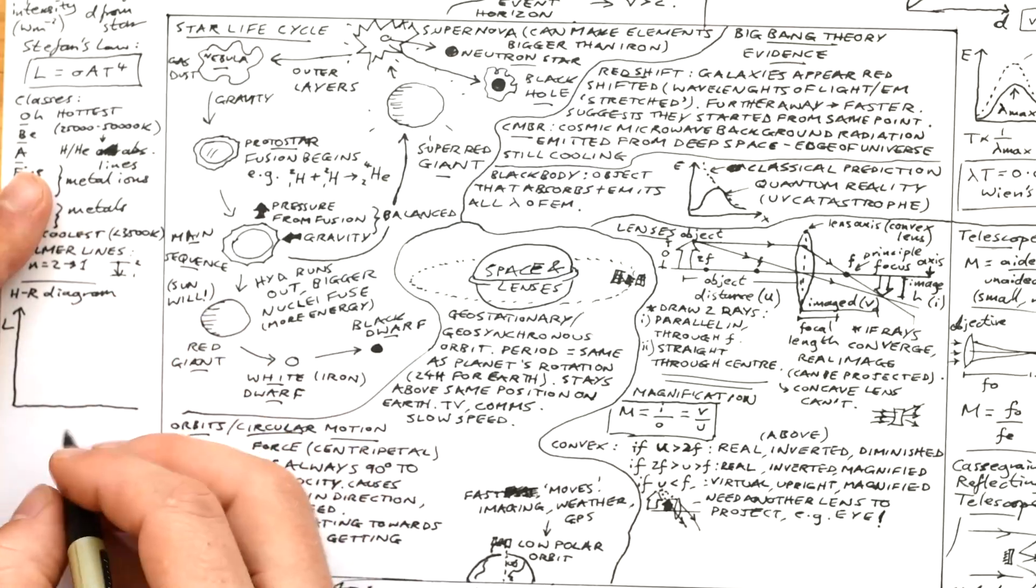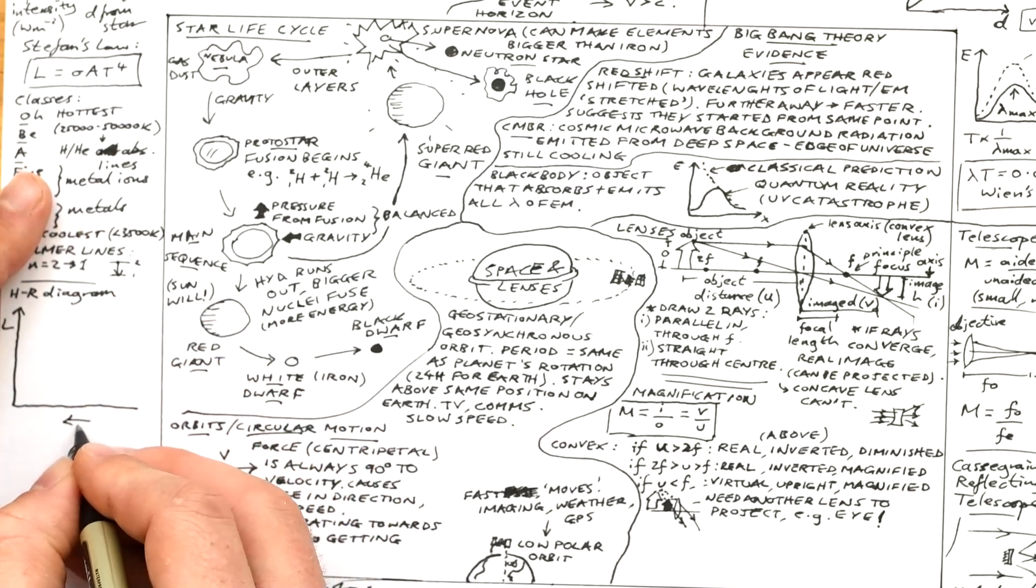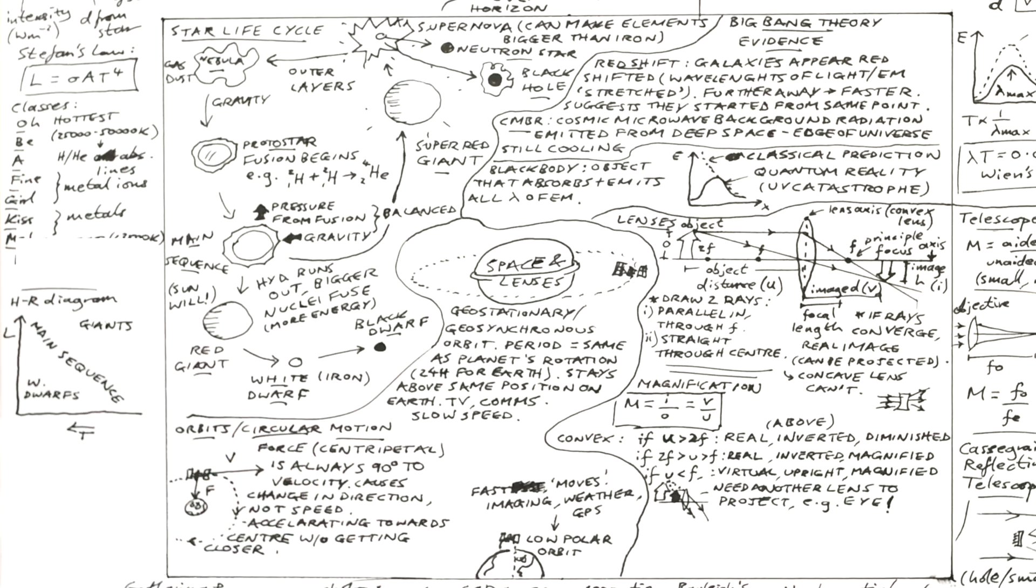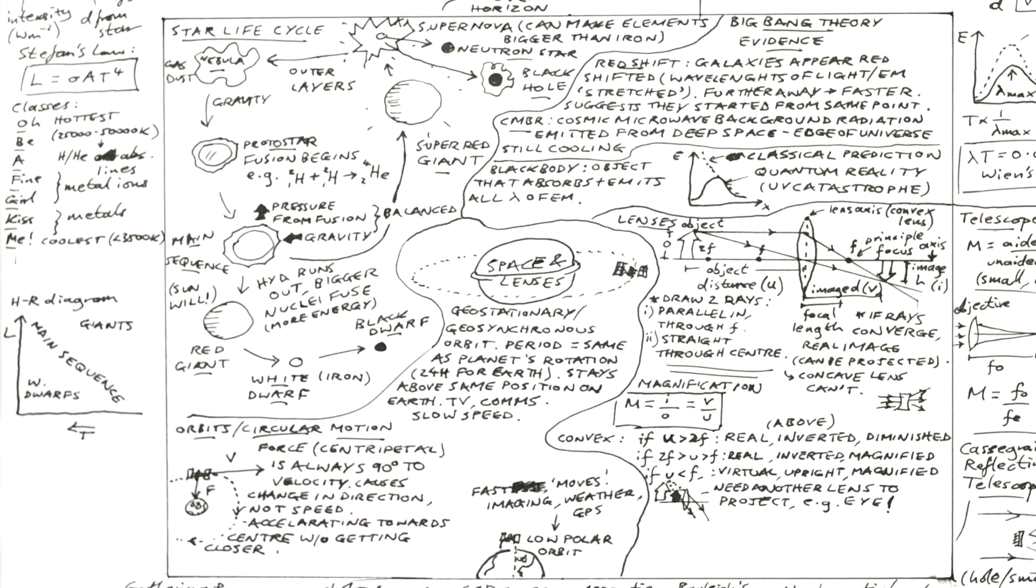Here's the HR or Hertzsprung Russell diagram of luminosity against temperature. We're actually getting cooler as we go to the right though. And we have the curve going down into the right. That's where our main sequence stars are found. Bottom left we have white dwarves that are pretty hot but not very bright. They are the Love Island contestant version of stars. And then up top right we have where the giants are, your red giants and super red giants.